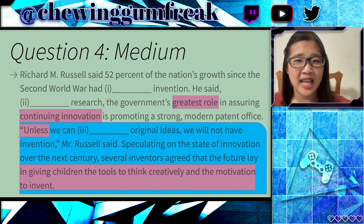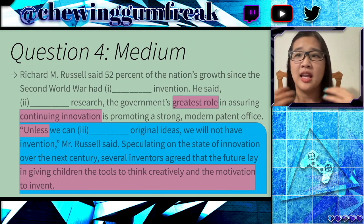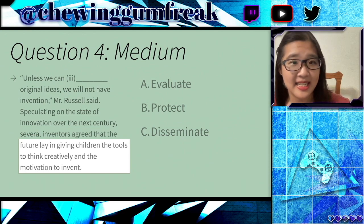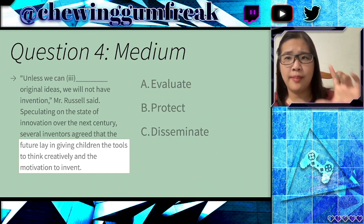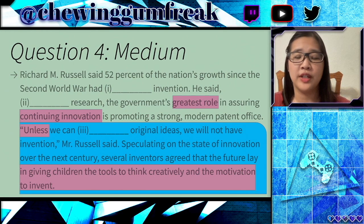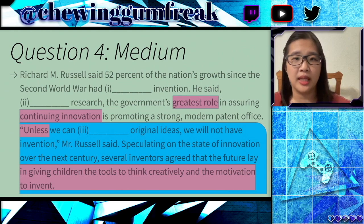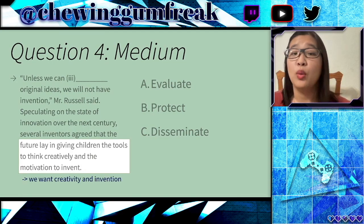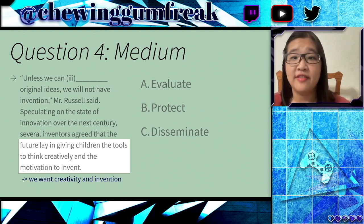Because most of our information comes from that last sentence, it makes sense to start from the last blank. If we just look at the first two sentences, it's a little bit hard to figure out what kind of word we want for each blank. Because we have so much more information for the third blank, we can start with that one. We want creativity and invention, and we have three answer choices for this blank: evaluate, protect, and disseminate.